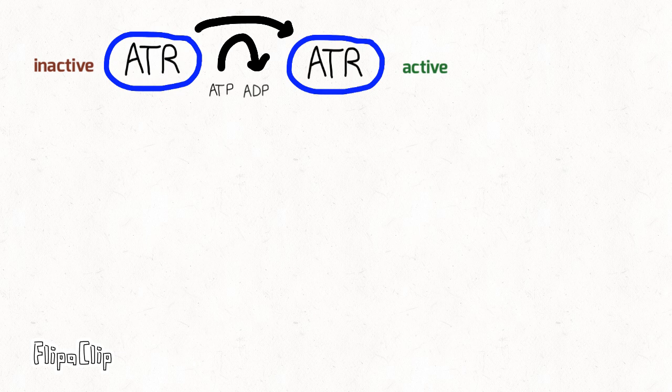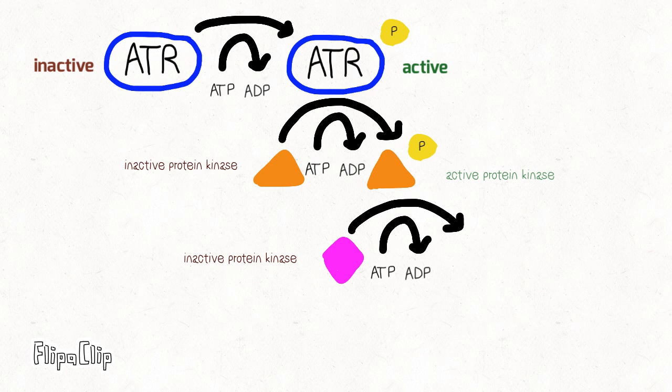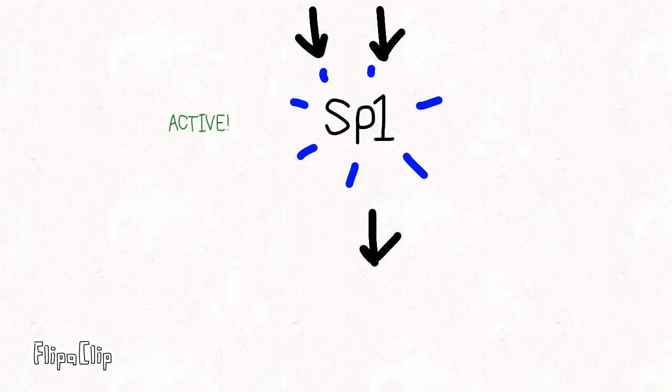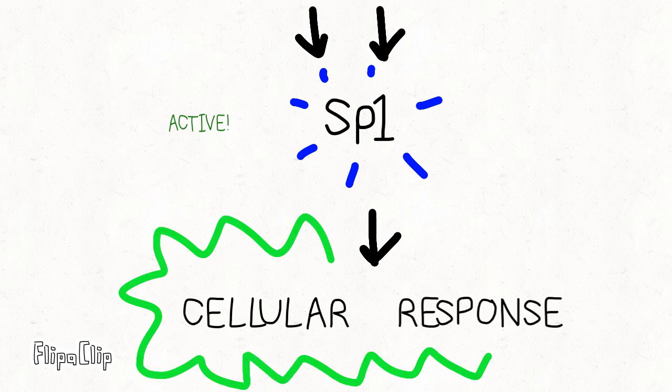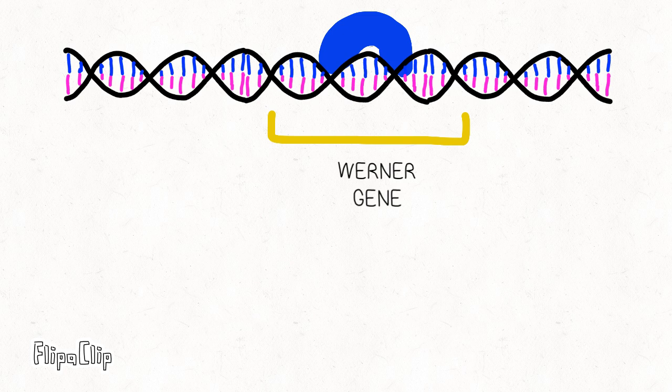This leads to a signal transduction pathway, where protein kinases are constantly activated and deactivated in a phosphorylation chain until the chain activates the transcription factor SP1. The active SP1 initiates a cellular response, which codes for a gene on chromosome 8 of DNA called the Werner gene.